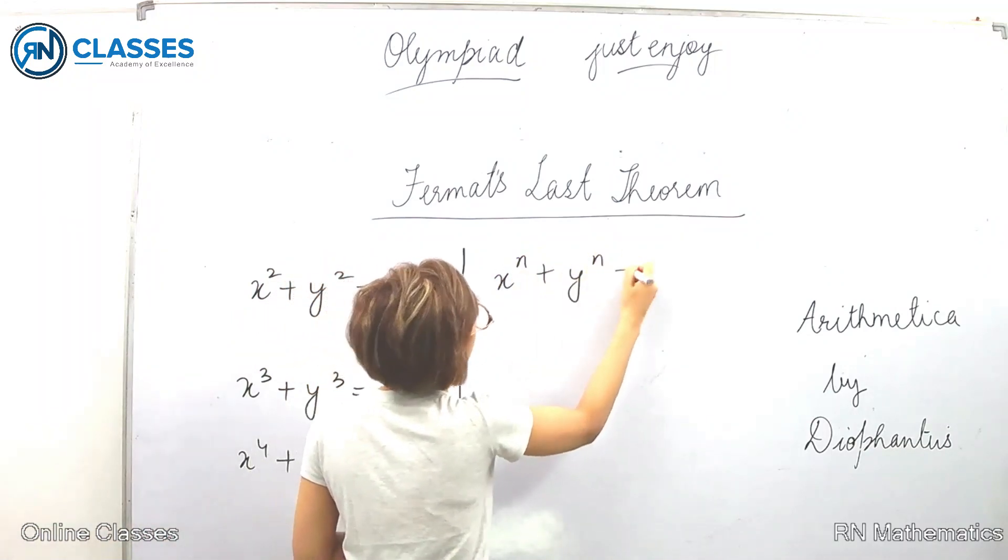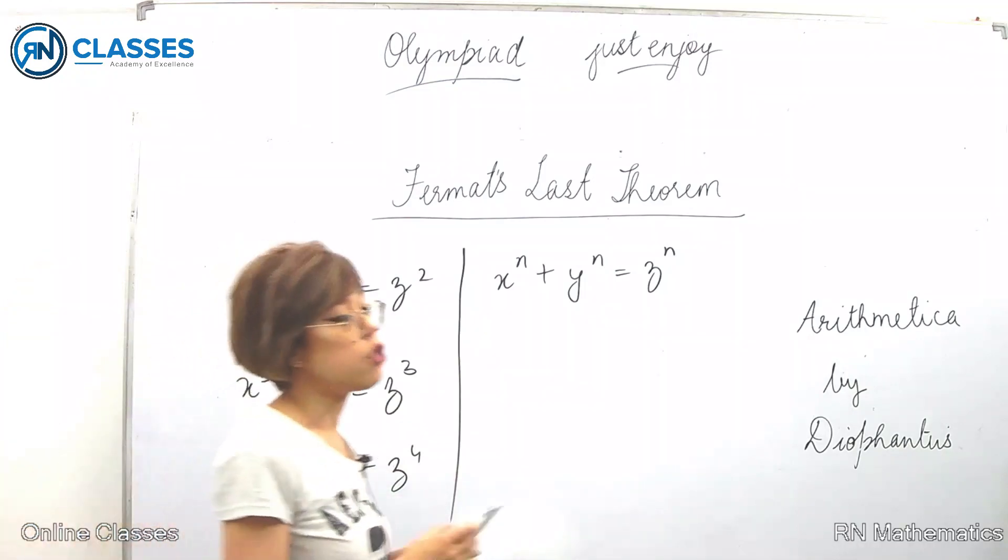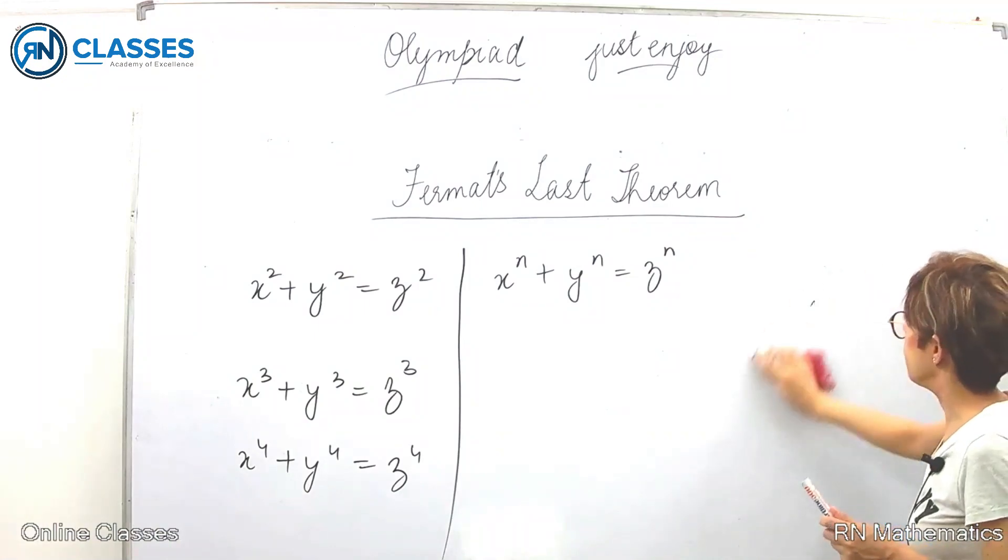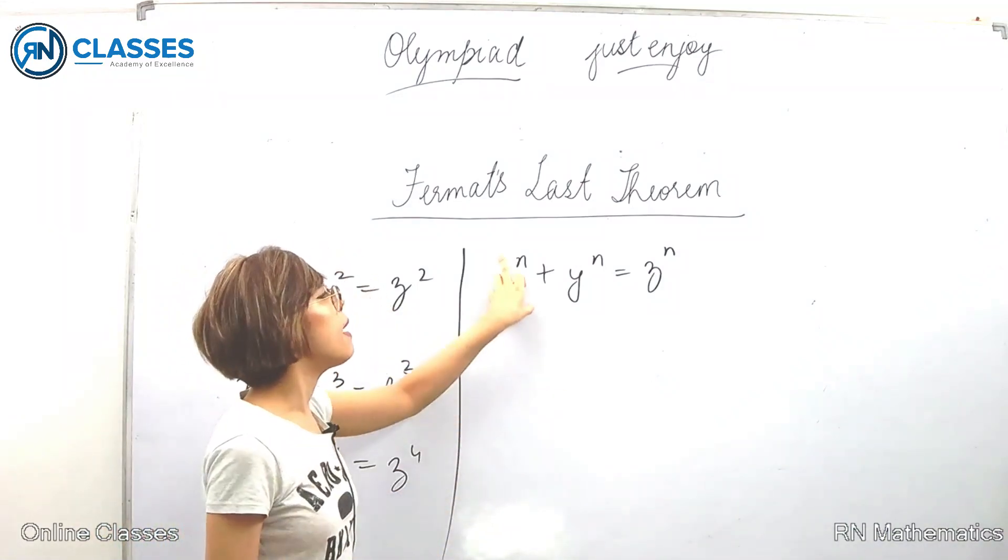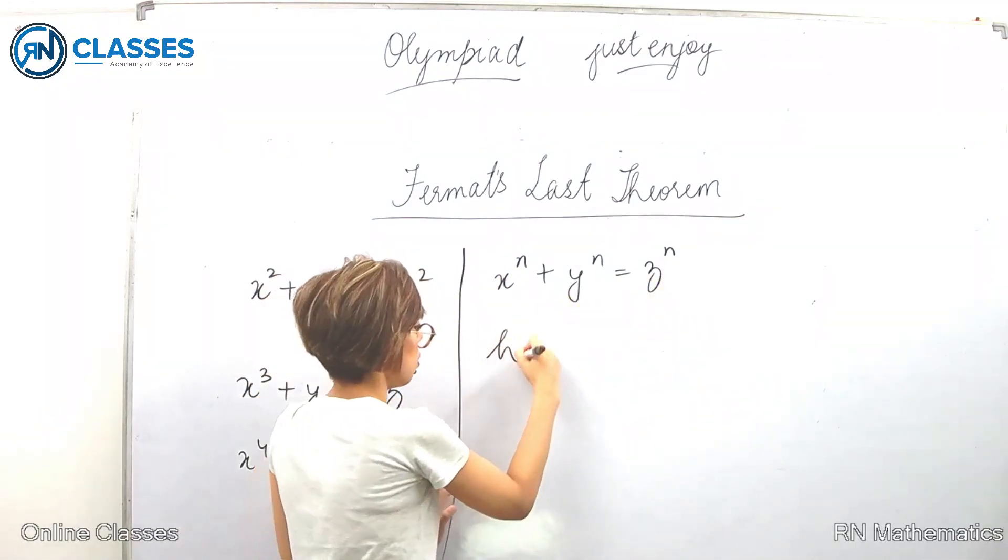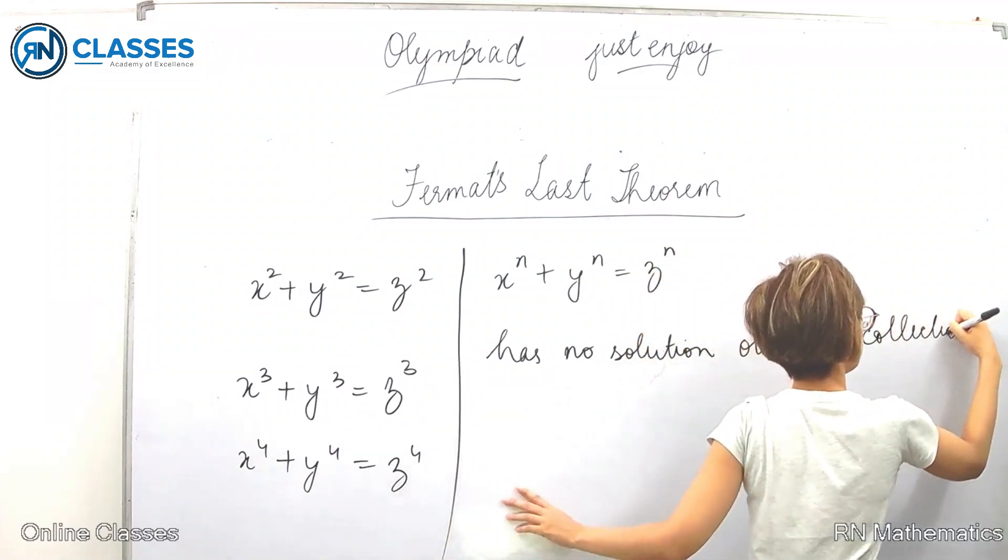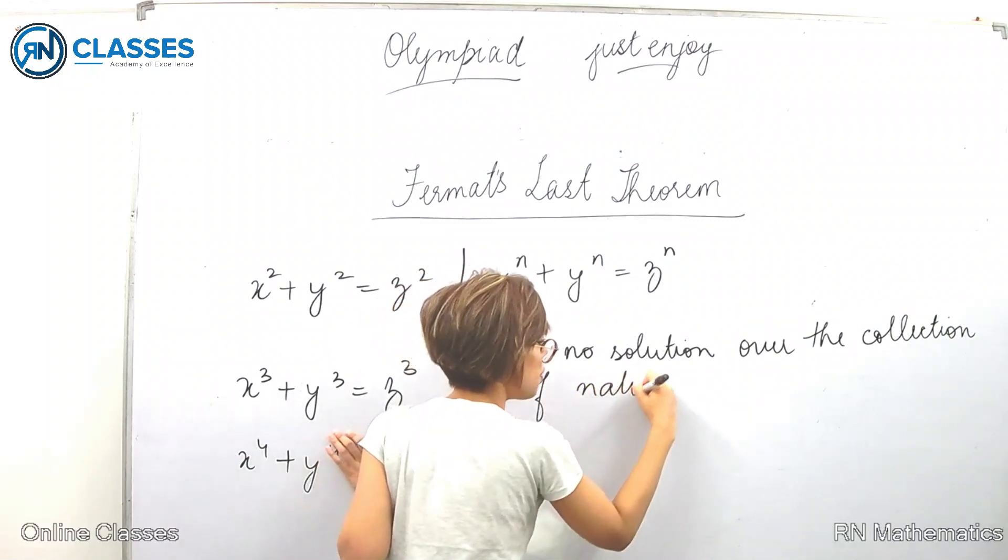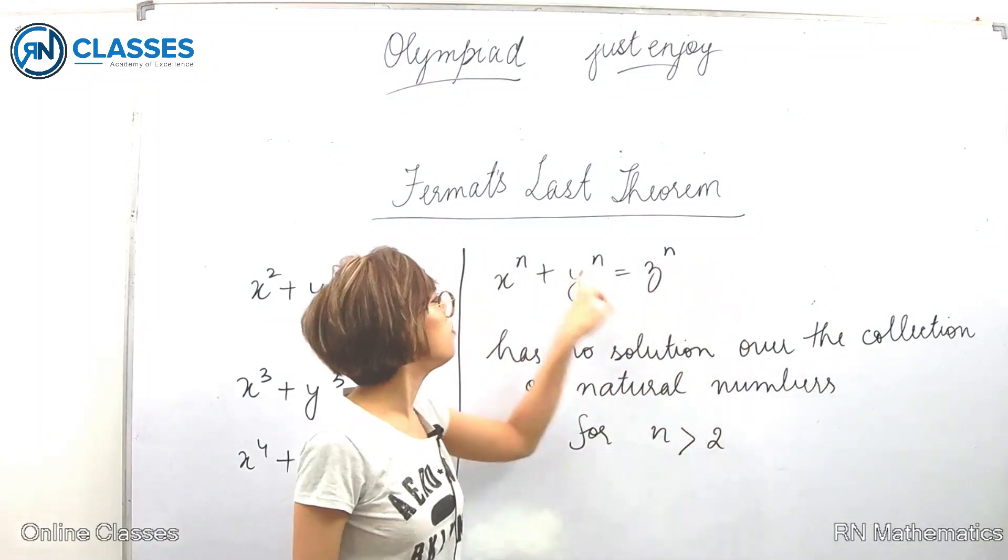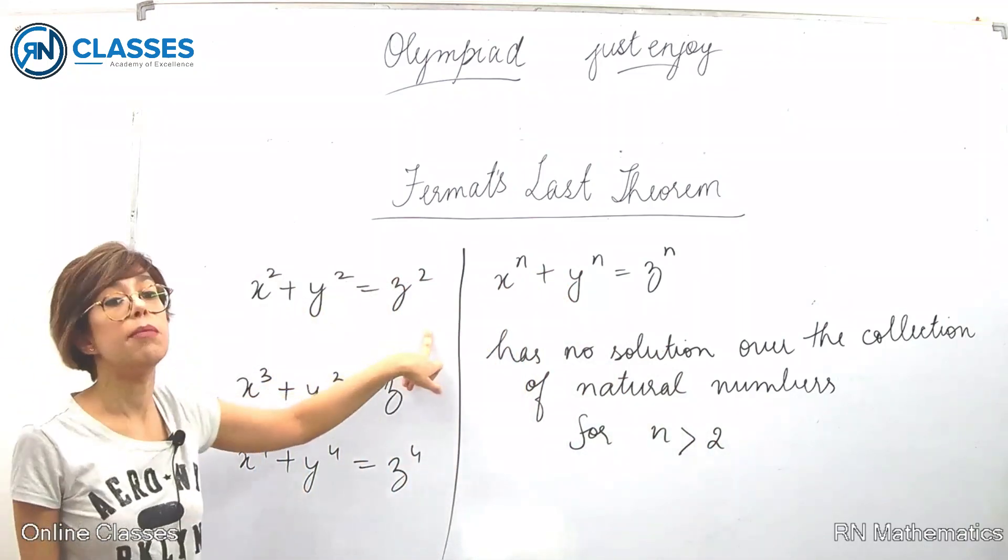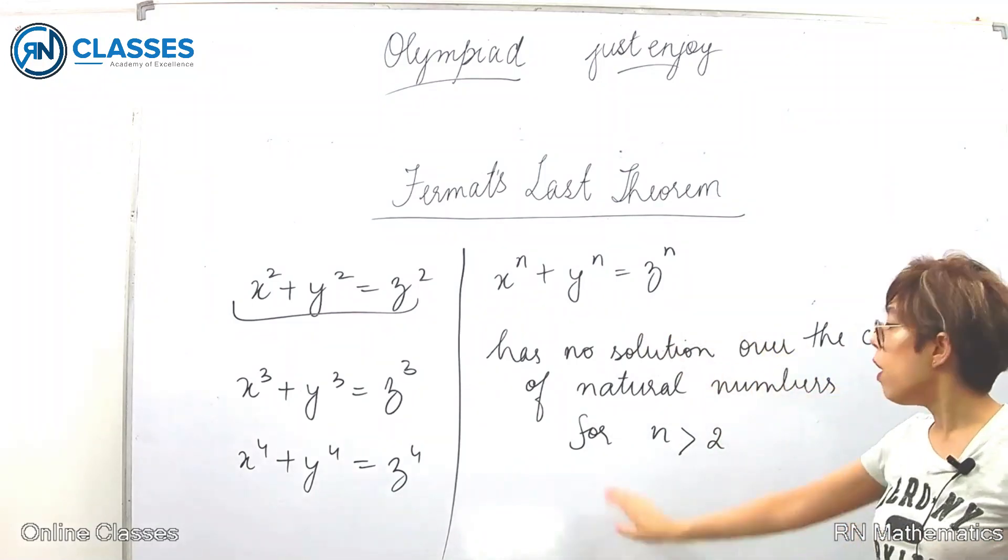He tried to find the solution of this equation over the collection of natural numbers. This is the theorem: x^n + y^n = z^n has no solution over the collection of natural numbers for n greater than 2. When n equals 2, we know there are infinite solutions.